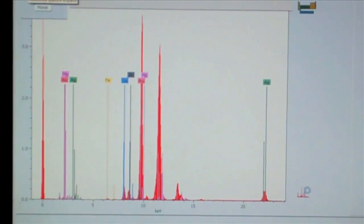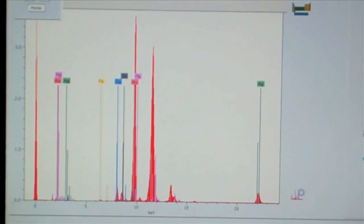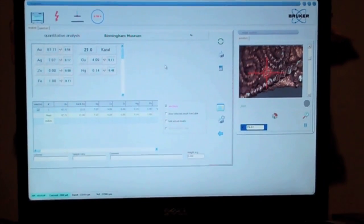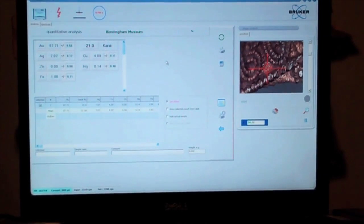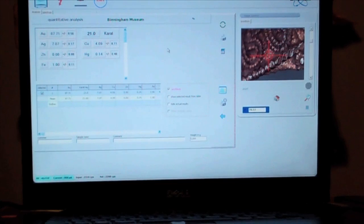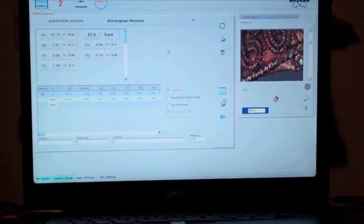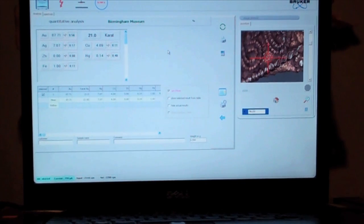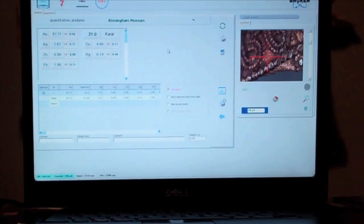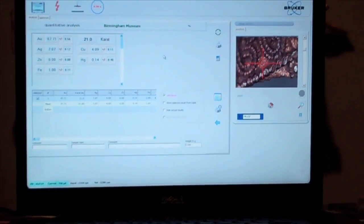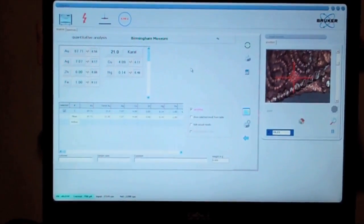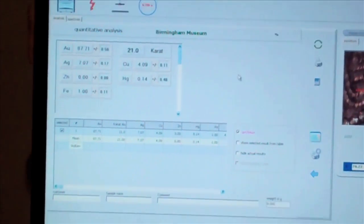So this is the spectrum that's produced by the X-ray fluorescence. What we can see from this spectrum is that the machine has figured out the composition of this gold sheet that we have tested. It is a 21 carat gold. It is made of almost 88% gold, there's about 7% silver and about 4% copper.